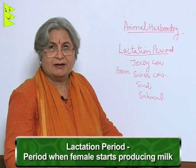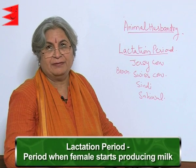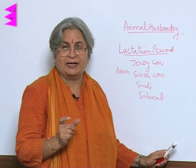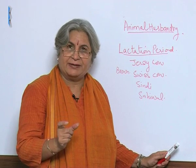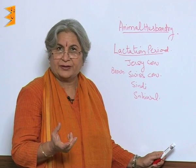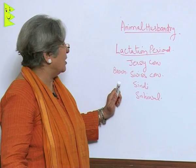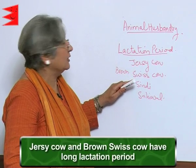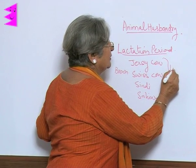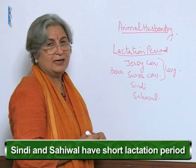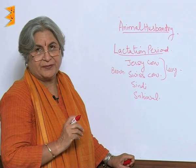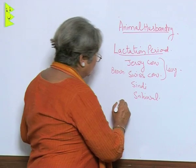The lactation period is the period when the female is able to yield milk — certainly after the birth of the calf. The length of the lactation period determines the milk yield, so a longer lactation period means more milk production. Exotic varieties like the Jersey cow or the Brown Swiss cow have long lactation periods, while indigenous varieties like Sindhi and Sahiwal have shorter lactation periods. So we choose the variety with a longer lactation period.